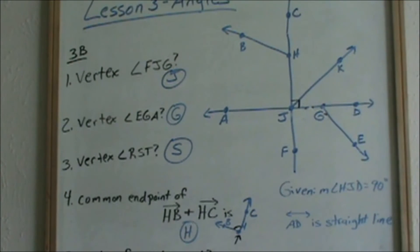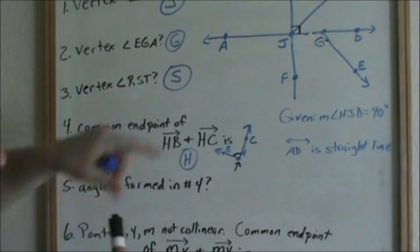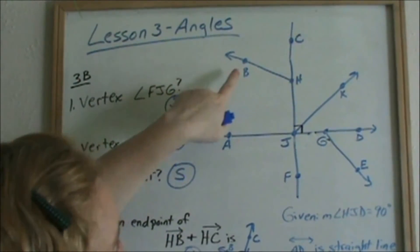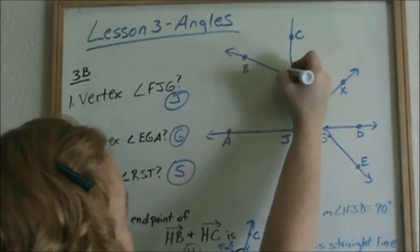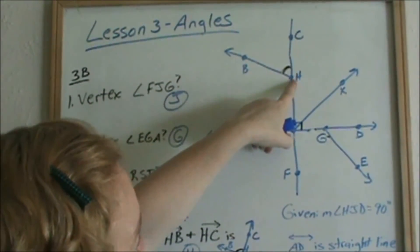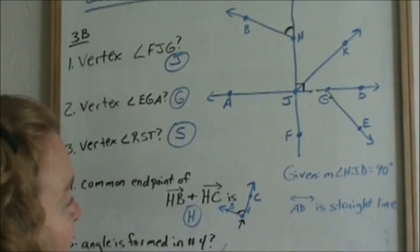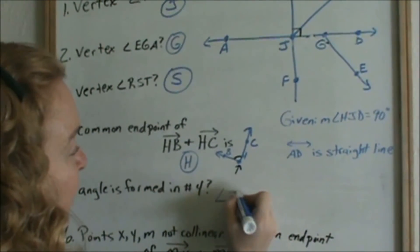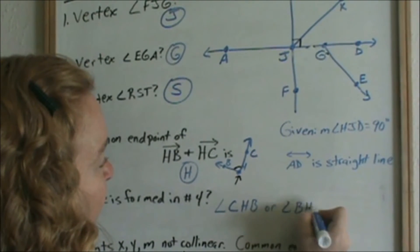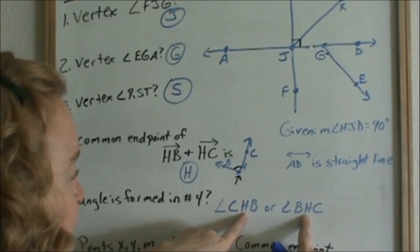So then number 5 says, what angle is formed in number 4? Well, looking at this picture of the two rays we put together, or if you go back up here to your big picture, here is HB, ray HB and ray HC. So therefore, the angle formed is this angle right there, we can call it either BHC or CHB. There are two different names you can call it. And you need to have the angle symbol, it's very important. So I said we can call it CHB or angle BHC. The thing that is most important is that H is the middle letter for your vertex. That is what is important.